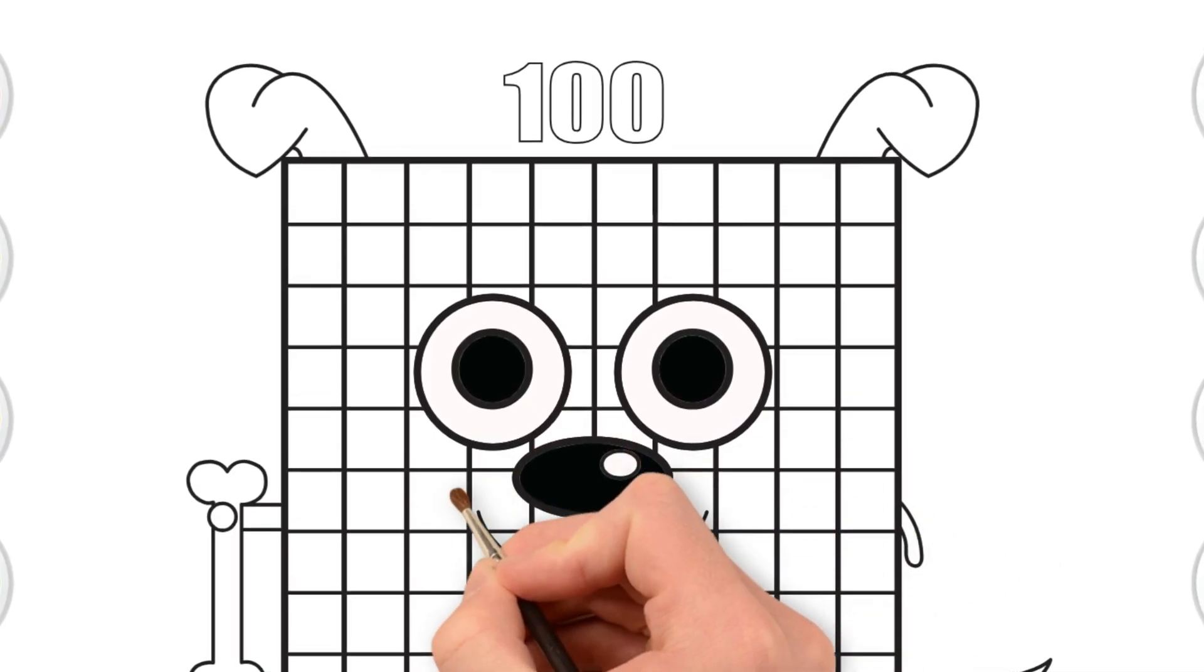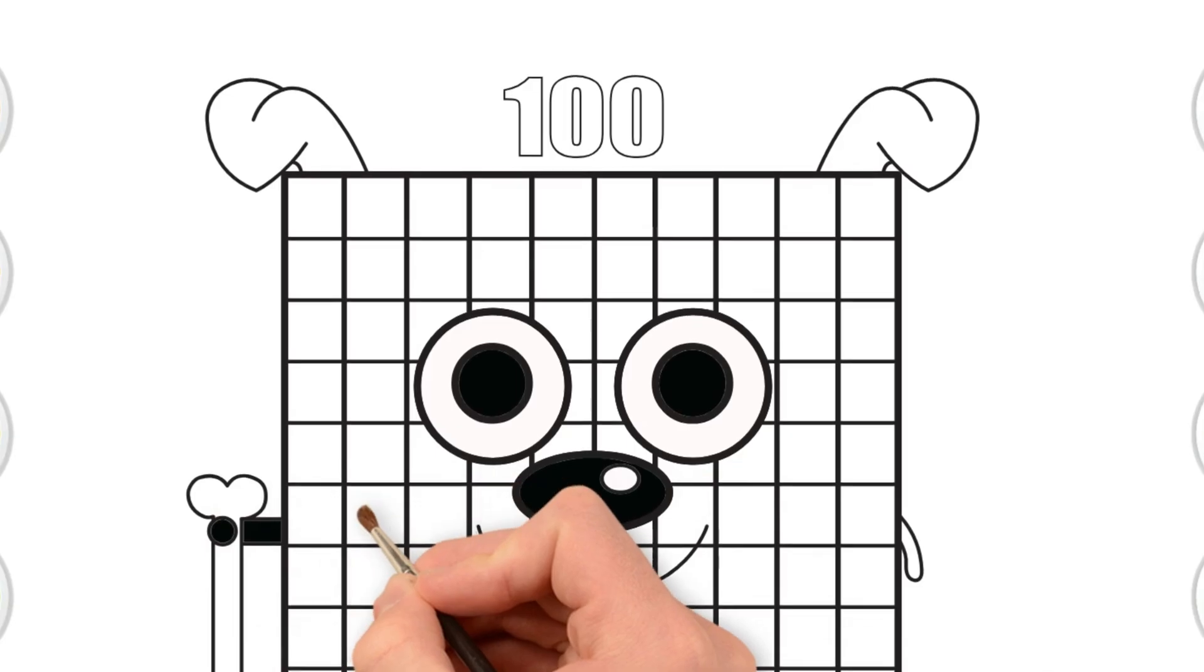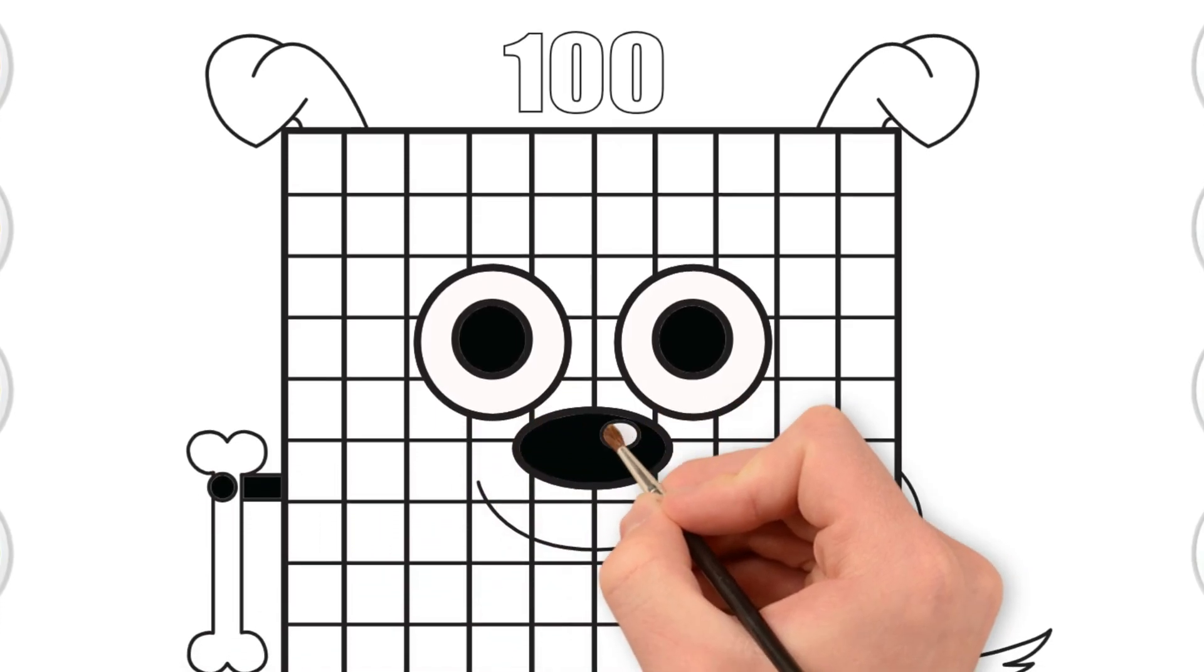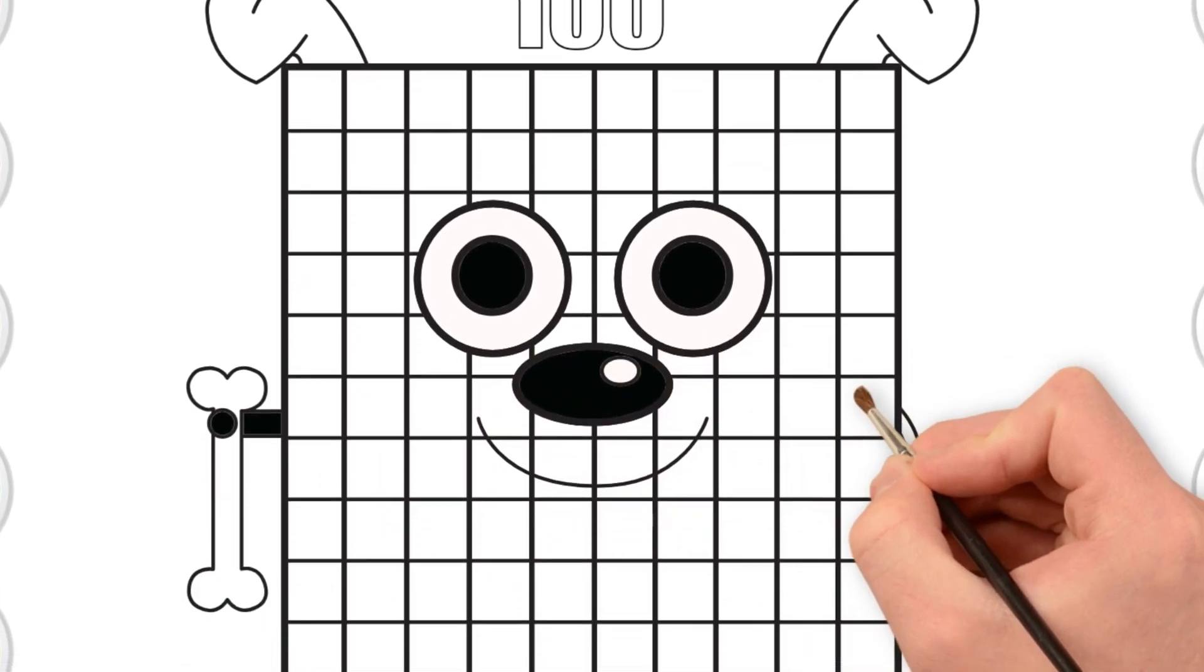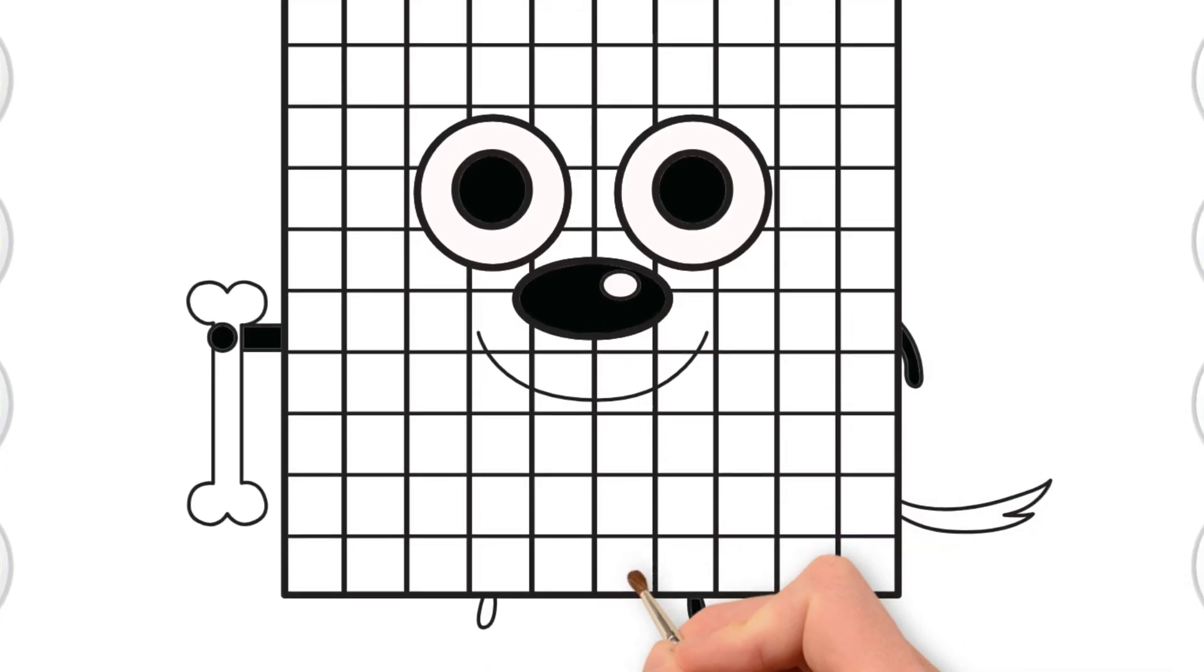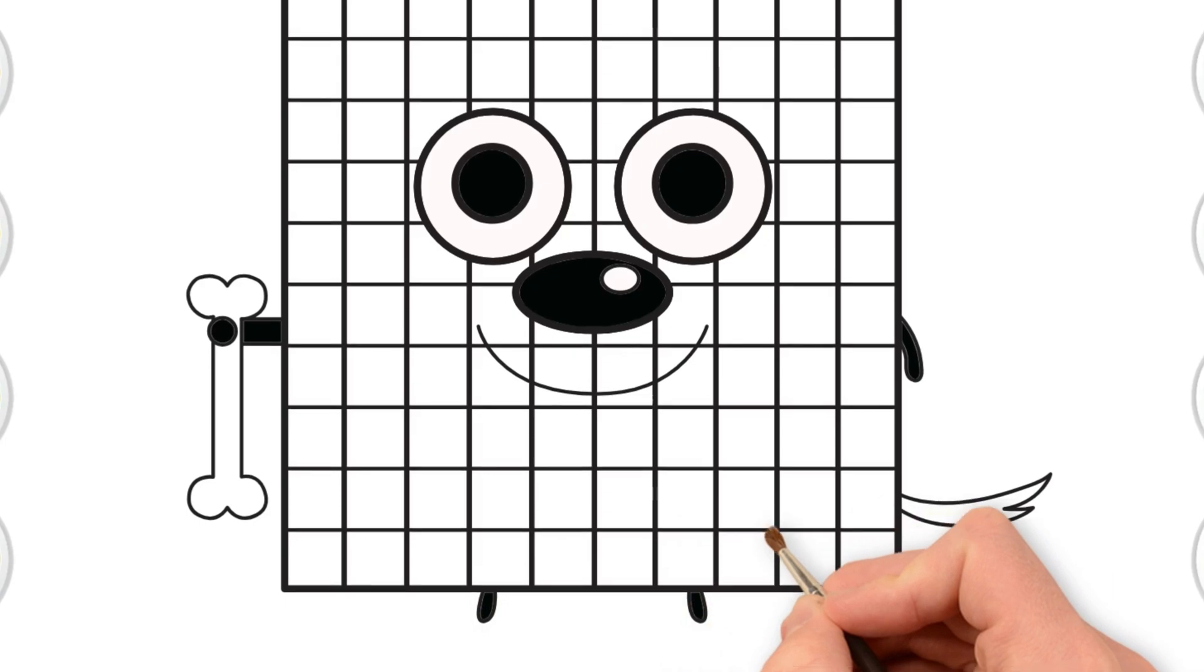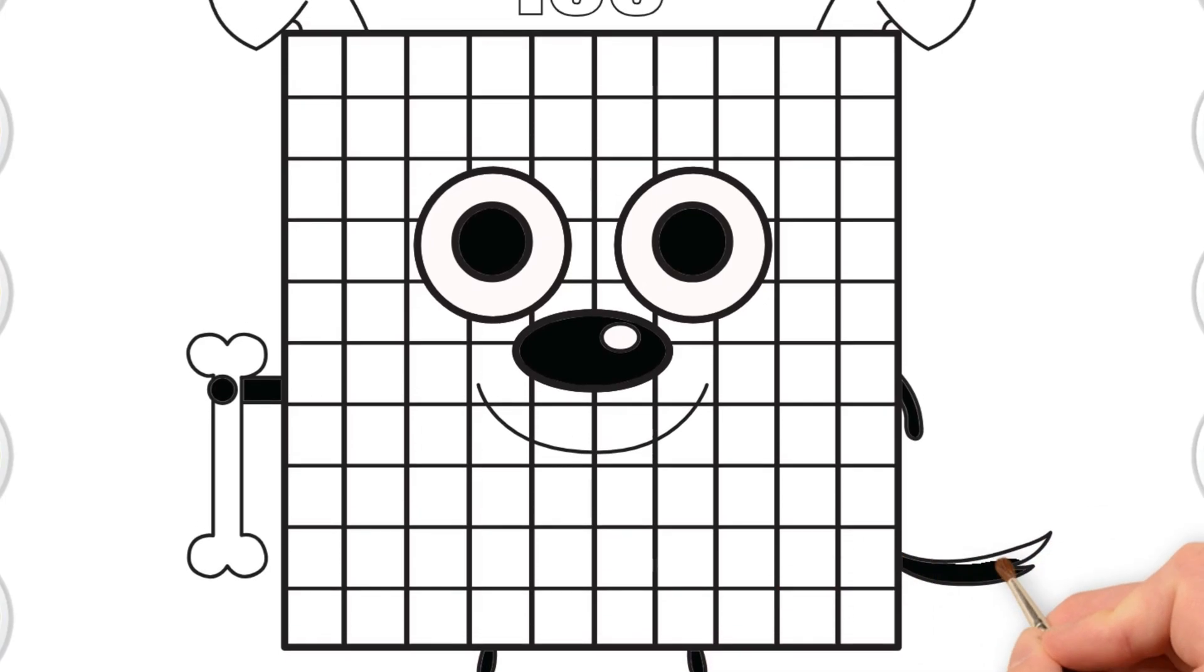Now, move to the arms. Do you know what else is black? A chalkboard. A night sky. And sometimes, a cat or dog's fur. Don't forget the legs, both left and right. And finally, the tail.